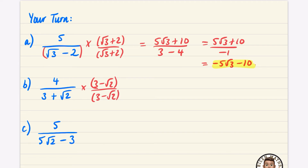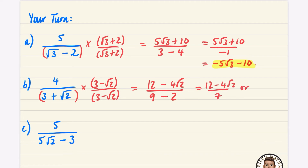The second practice question: multiply by three minus root two with brackets. The numerator gives three times four which is twelve, and four times minus root two which is minus four root two. The denominator: three times three is nine, minus root two times root two which is two. So the answer is twelve minus four root two over seven, or split as twelve over seven minus four root two over seven. Either form is a good answer.